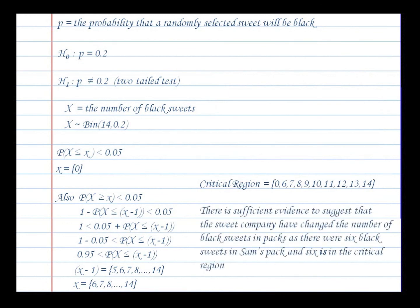There is sufficient evidence to suggest that the sweet company have changed the number of black sweets in the packs, because there were 6 black sweets in the pack and 6 is in the critical region.